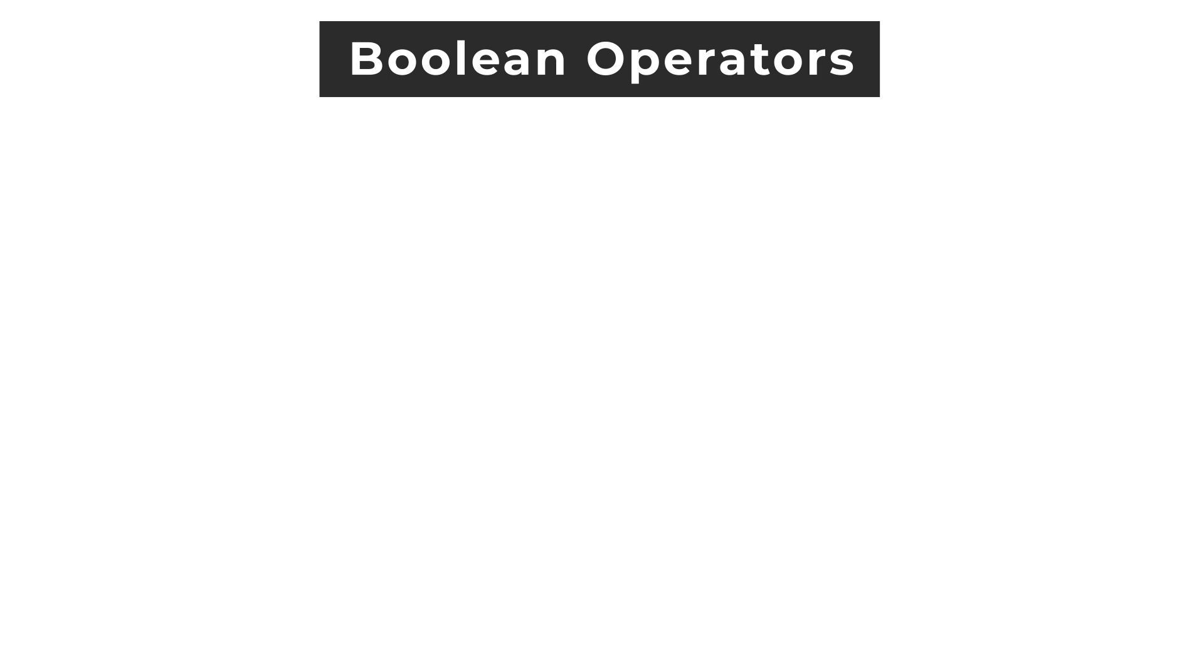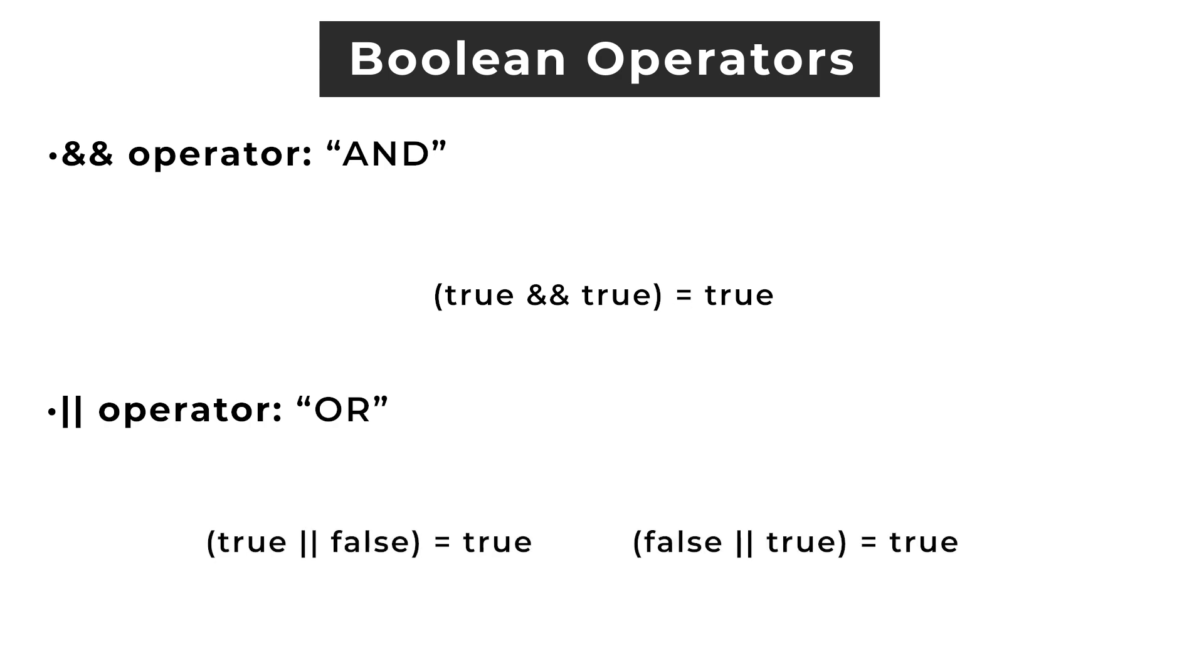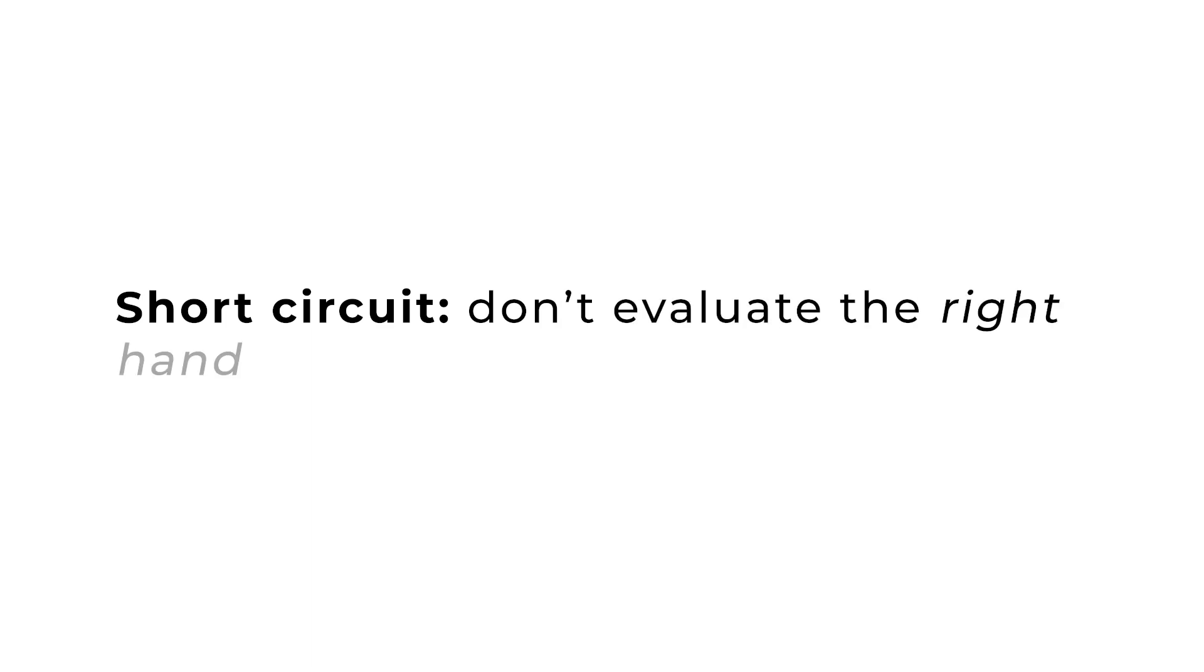In order to understand short-circuiting, let's first take a look at two Boolean operators. The AND-AND operator means AND, such that both sides of the condition must be true. The OR-OR operator means OR, such that only one side of the condition must be true. In both instances, these operators short-circuit, meaning that they don't evaluate the right-hand side operand if it isn't necessary.